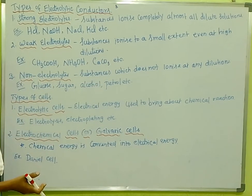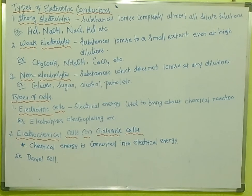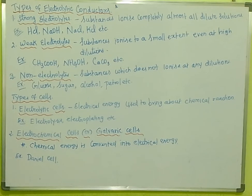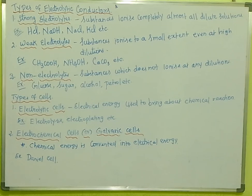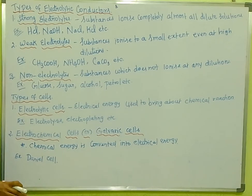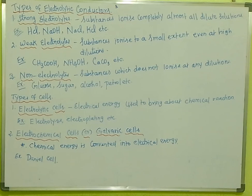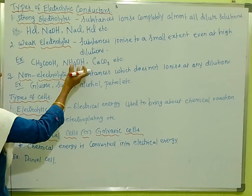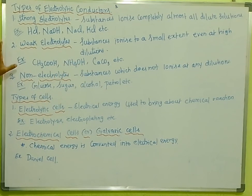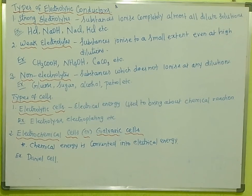For strong electrolytes, in dilute solutions the substance is completely ionized. That is a strong electrolyte. For weak electrolytes, even at higher dilute solutions, the substance is only partially ionized. Strong electrolytes include HCl, sodium hydroxide, sodium chloride, and potassium chloride — all completely ionized. Weak electrolytes include acetic acid (CH3COO- H+) and ammonium hydroxide (OH- NH4+), ionized only to a small extent.